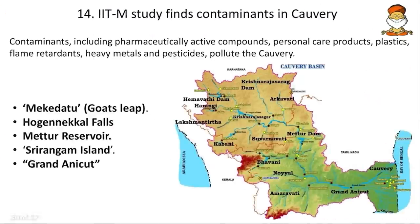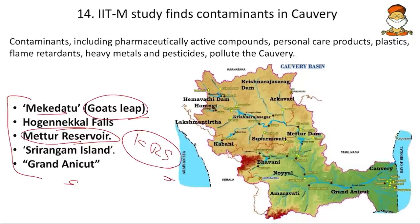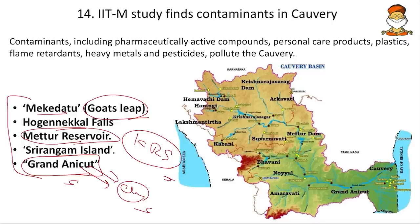IIT Madras studied contaminants in the Kaveri basin from pharmaceutical companies on its banks. Some important places on the Kaveri: Mekedatu — a controversial point between Tamil Nadu and Karnataka (meaning 'goat's leap') where Karnataka proposes a dam. Hogenakal Falls is also on the Kaveri. Mekedatu Dam and KRS (Krishna Raja Sagara) Dam are in Karnataka; Mettur Dam is in Tamil Nadu — both on the Kaveri. Srirangam Island and the Grand Anicut, built by the Chola kings, are also important.